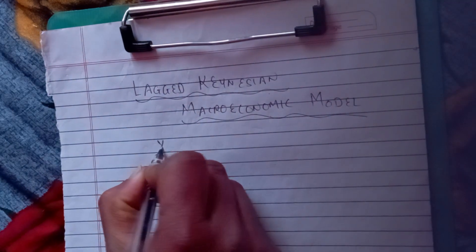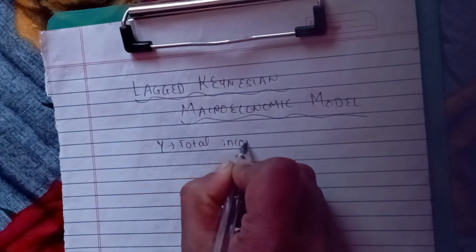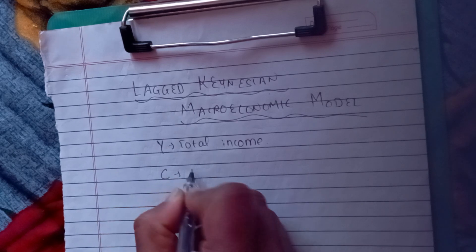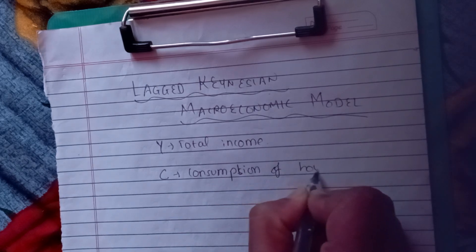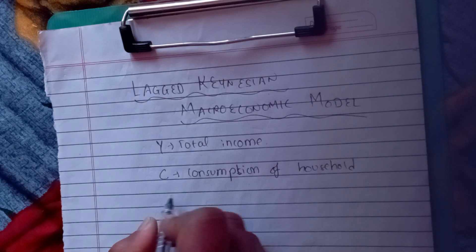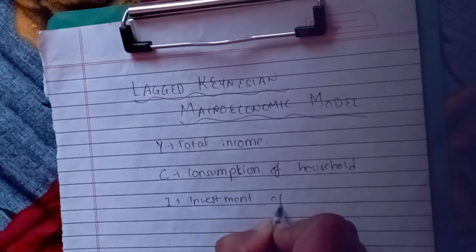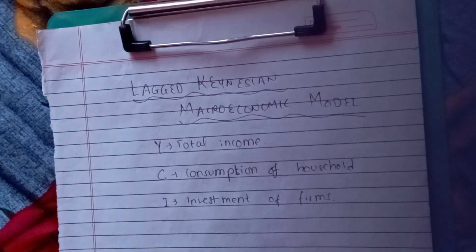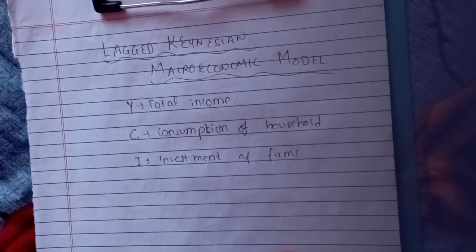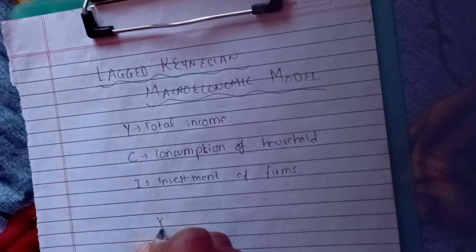We are going to discuss a little bit. We are going to discuss the total income, the consumption of the household, and the investment of the firm. We are going to discuss the mathematical process. The investment of the firm — so this is the question.